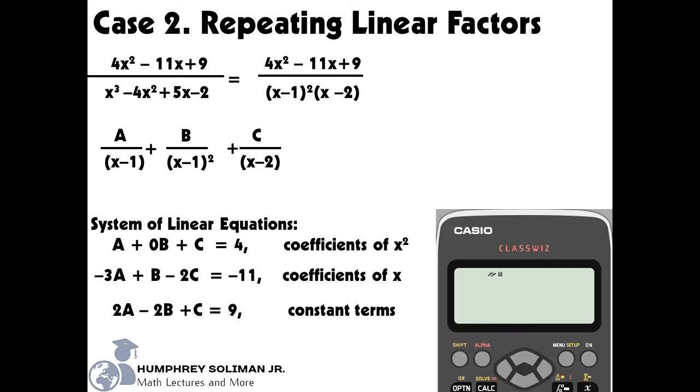We will now use the Casio ClassWiz calculator to find the values of A, B, and C. First step is to put the calculator in equation mode. Second, we will select option 1, simultaneous equations. Third, we will input the number of equations we have in our system, which is 3.